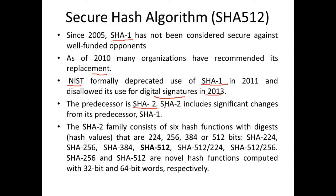The successor to SHA-1 is SHA-2, which is a family of six hash functions: SHA-224, SHA-256, SHA-384, and SHA-512. When I say SHA-512, the hash function gives an output of 512 bits, whereas SHA-1 gave only 160 bits. SHA-224 gives 224 bits. So the message digest size differs across variants. Today we will focus on SHA-512.